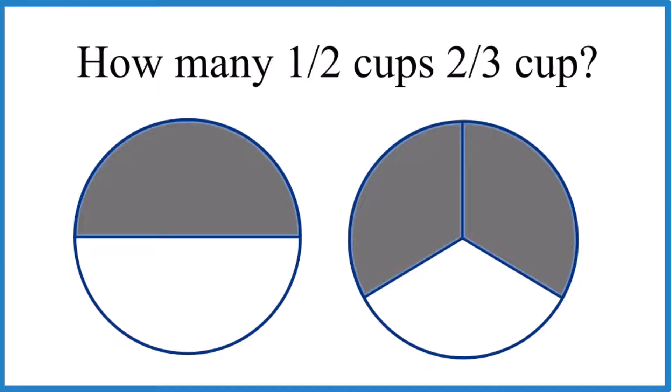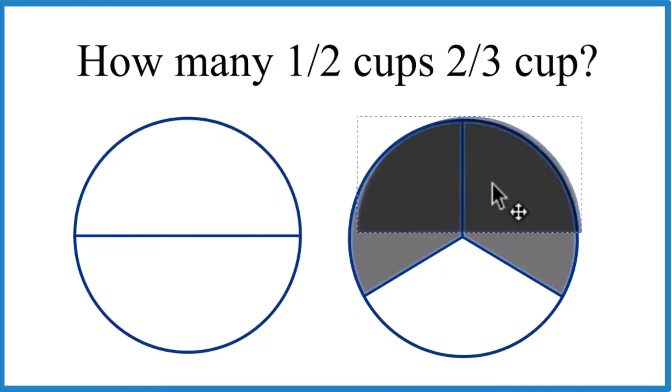We can see that when we have this one-half here, one of them will fit in, but not two. But how do we figure that other space out?